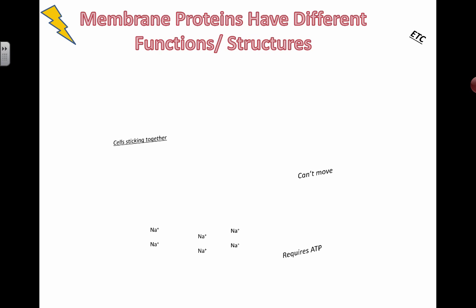Everything that the DNA codes for is primarily proteins. They all do different types of functions, so we're going to look at the different types. Specifically, we're looking at the proteins that can be found inside a plasma membrane.